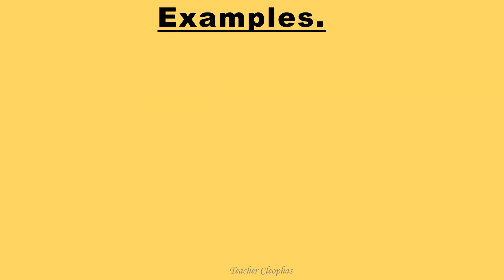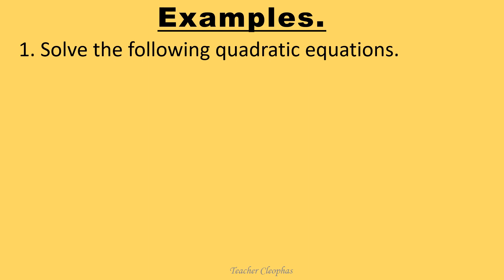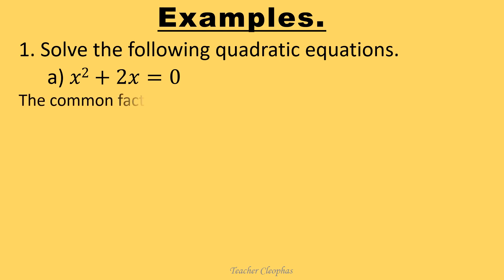Our discussion will be based on examples. Our first question is: solve the following quadratic equations. First, x squared plus 2x equals to zero. To factorize, we seek the common factor on the left hand side, and for that matter the common factor is x.